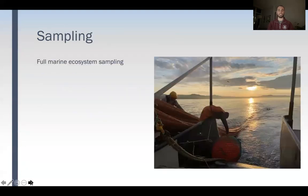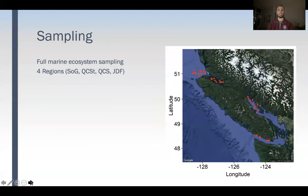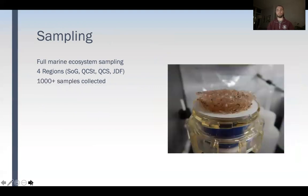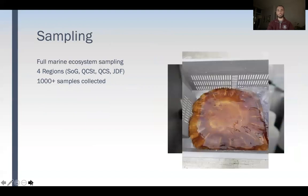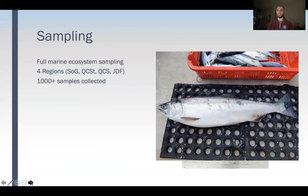To do this project, we did a full marine ecosystem sampling program where we boarded a trawl survey and traveled to four different regions around the BC coast. These were the Strait of Georgia, Queen Charlotte Strait, Queen Charlotte Sound, and Juan de Fuca. We collected over 1,000 samples from everything from particulate organic matter, to zooplankton, to jellyfish, to large-bodied Chinook salmon.